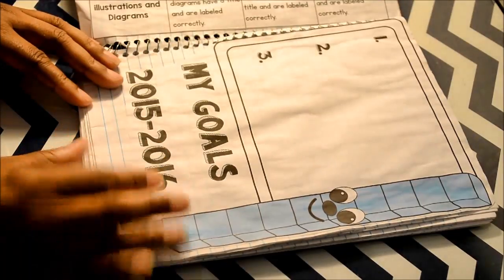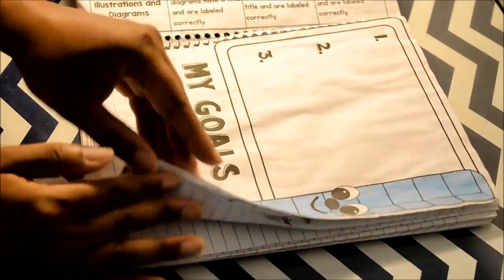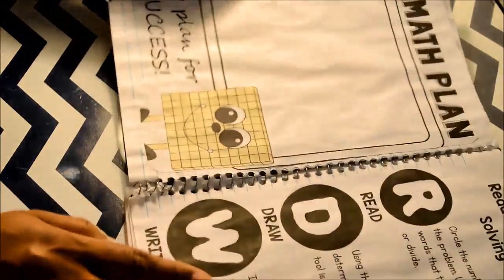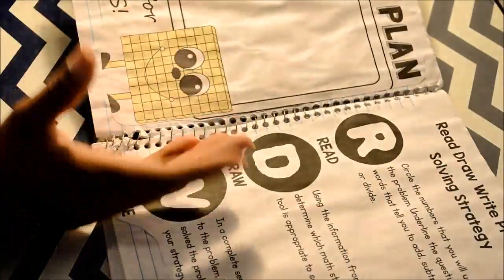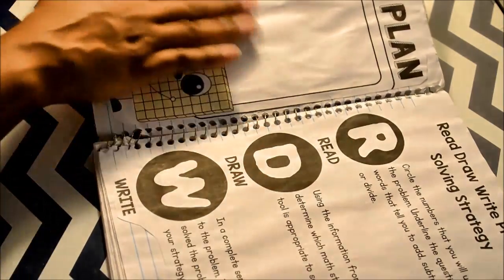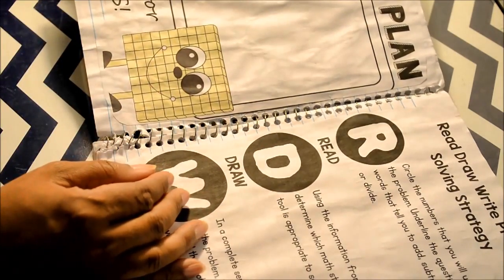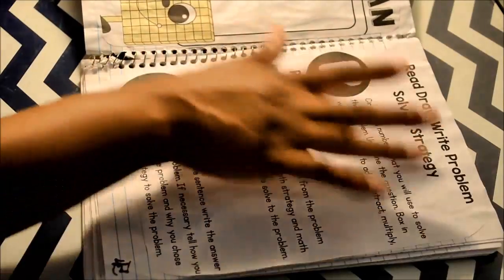Also, there's a goals page. Then, there's a My Math Plan page. How are they going to achieve these goals? Because having goals is great. But what is your action plan? How are you going to achieve those goals?